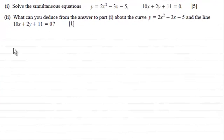Hi there. Now for this question, the first part, we've got to solve the simultaneous equations y equals 2x squared minus 3x minus 5 with the equation 10x plus 2y plus 11 equals 0 for 5 marks.